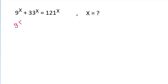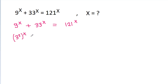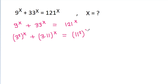So we have 9^x + 33^x = 121^x. We rewrite the bases: 9 is 3 squared, so (3²)^x; 33 is 3 times 11, so (3·11)^x; and 121 is 11 squared, so (11²)^x.